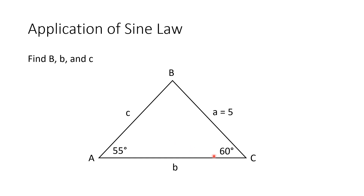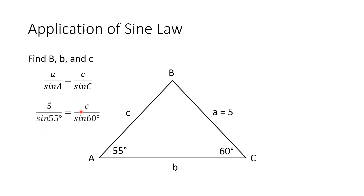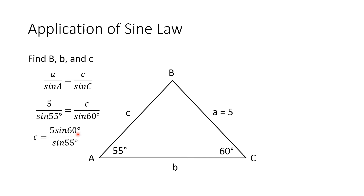Now we can find side C. Since we have values for both angle A and side A, and angle C is also given, we can use sine law: side A over sine of angle A equals side C over sine of angle C. Substituting the values: 5 over sine 55 degrees equals side C over sine 60 degrees. Simplifying for C, we get 5 times sine 60 degrees over sine 55 degrees, which gives us 5.29 units. Side C is longer than A because angle C is greater than angle A.